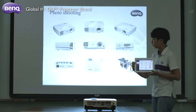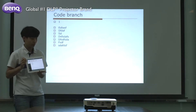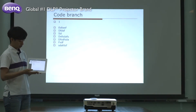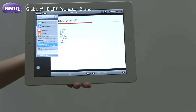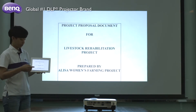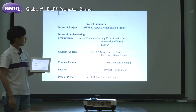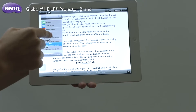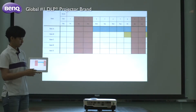The Q-Presenter Pro app also allows you to select other types of files saved on your mobile device, such as PDF files, Word files, and Excel files. Just follow the same steps of tapping the PowerPoint file first.